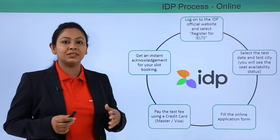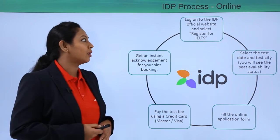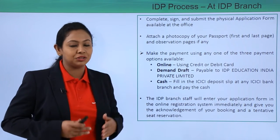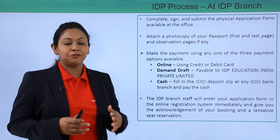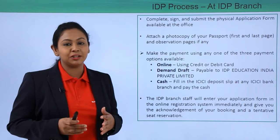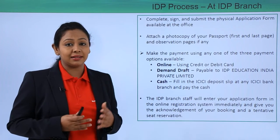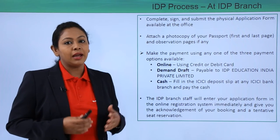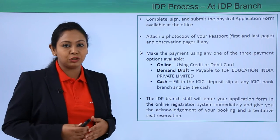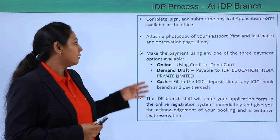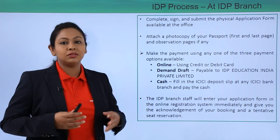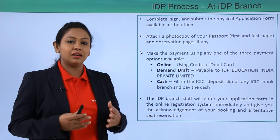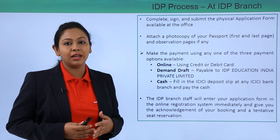Now let's look at the IDP registration process at the branch itself. For this, you will have to visit the nearest IDP branch, collect the application form from there, fill in the form, and attach the first and last page of your passport. Then make a payment using one of the three options available.